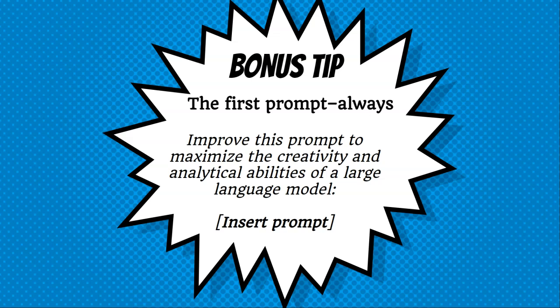One final bonus tip to improve your prompting outputs with generative AI: the first question to ask should always be asking the generative AI to improve the question you want to ask. I usually start with 'improve this prompt to maximize the creativity and analytical abilities of a large language model:' and then I insert my prompt. The new prompt it provides is the one I actually want to use, and I always get better results. Basically what I'm doing is saying, 'hey generative AI, here's a question that I have — improve it for me to get better results out of you.' And time and again, it gives me something that is much more robust. I can go in and tweak it and adjust it if it goes off in any direction, but if it has more heft and provides more context, that gets me a better answer.